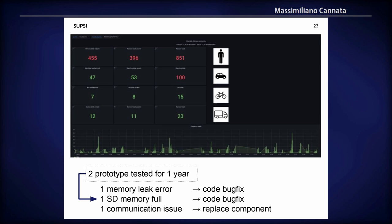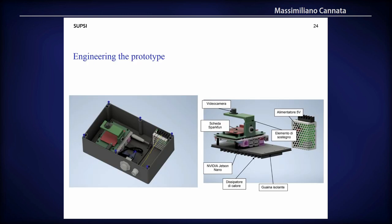So far we have tested two prototypes for one year in two different parks. We had some minor bugs due to memory leaks, SD memory filling up because we didn't manage the database correctly, and some communication issues requiring replacement. Currently we are in the phase of engineering the prototype, and in collaboration with a private company we are working to make this prototype more reliable from a production point of view.